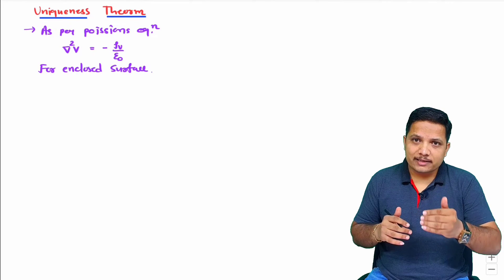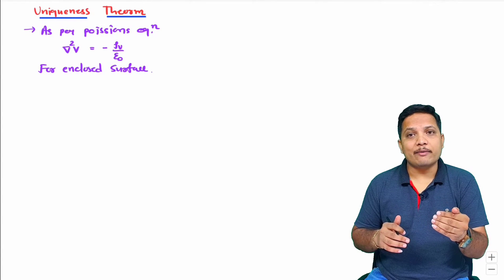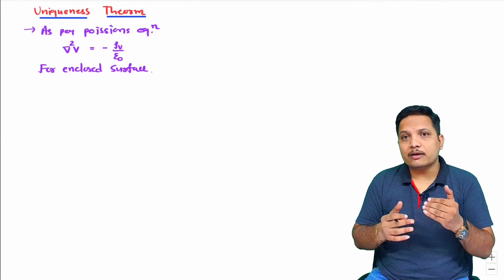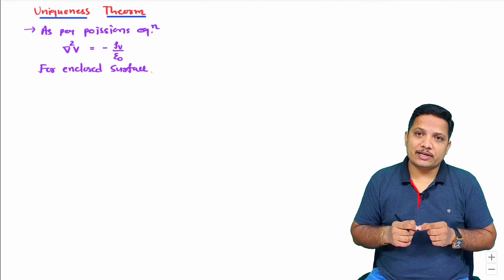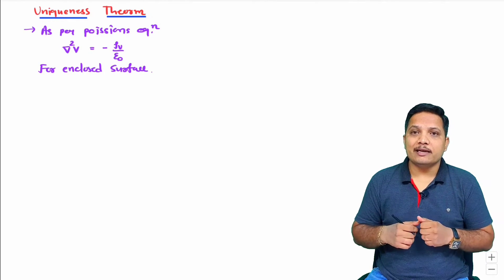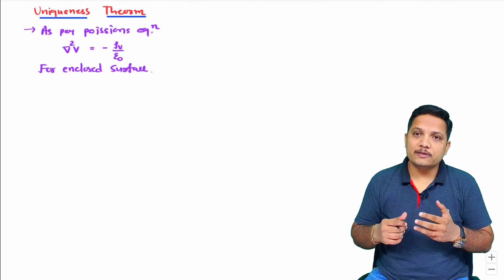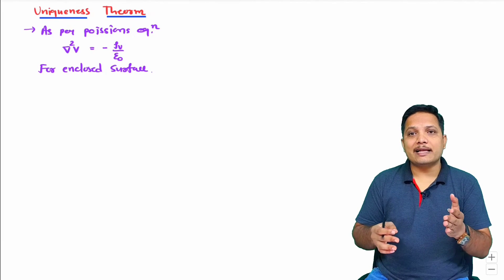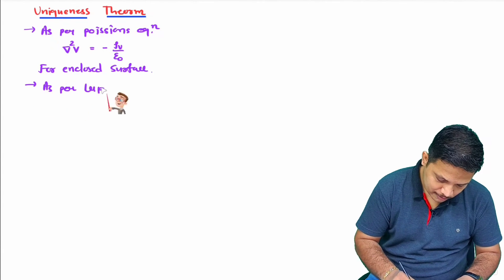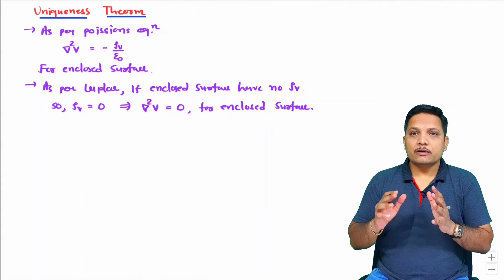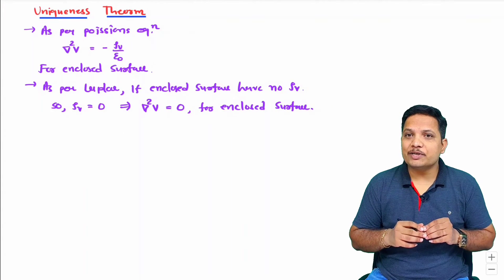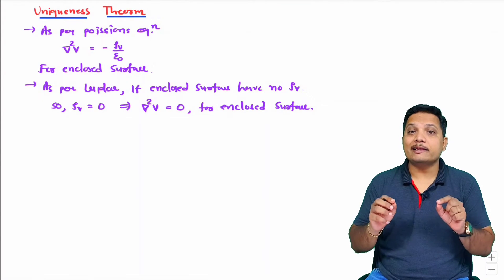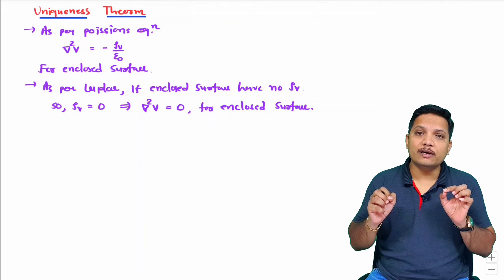Based on Poisson's equation — del squared V equals minus rho_v by epsilon_0, where rho_v is volume charge density — Laplace explained that if the enclosed surface is not covered by any volume charge, then del squared V equals 0. So as per the Laplacian equation, if rho_v is 0, then del squared V equals 0.